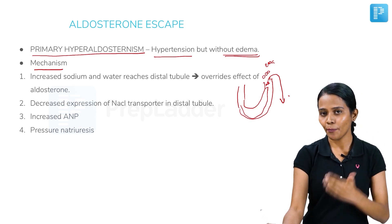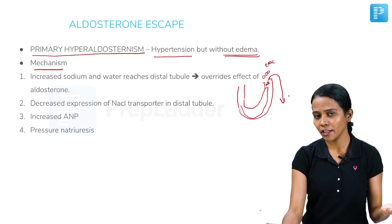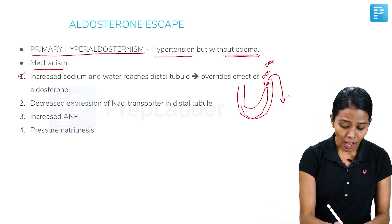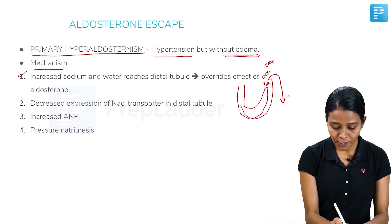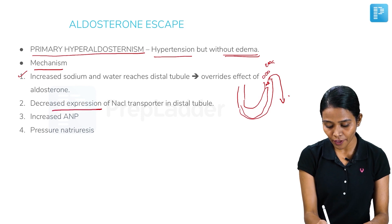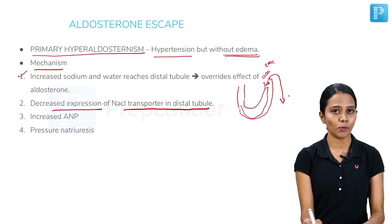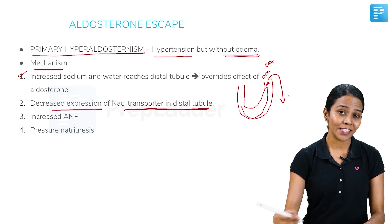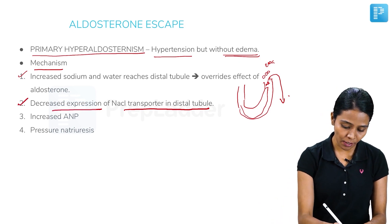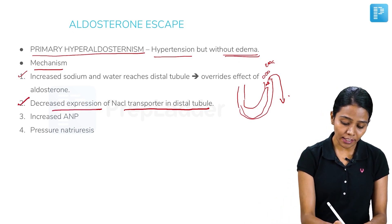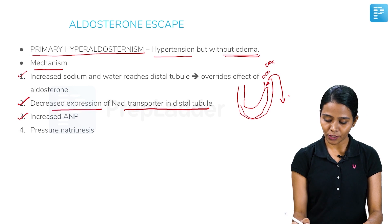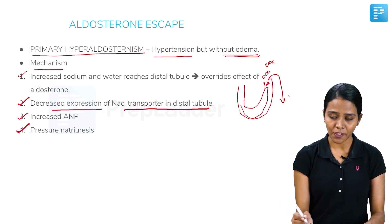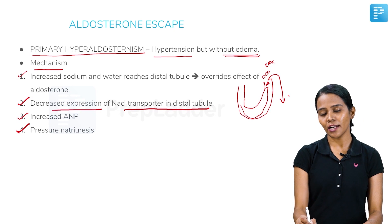After a point, however much aldosterone increases, sodium and water reabsorption cannot be increased further. Apart from this, the second mechanism is decreased expression of NaCl transporters in the distal tubule, which is also an important site of sodium reabsorption. Third is increased atrial natriuretic peptide, which causes natriuresis, and fourth is pressure natriuresis.